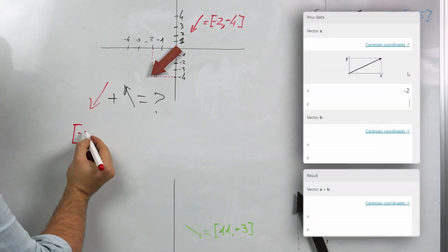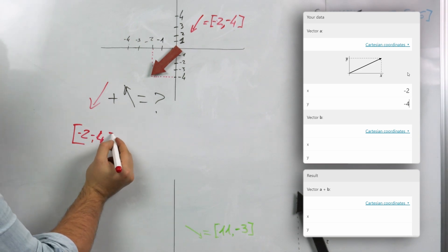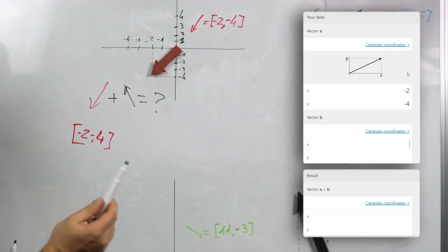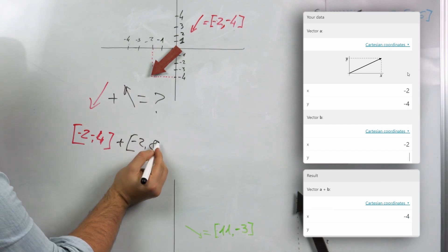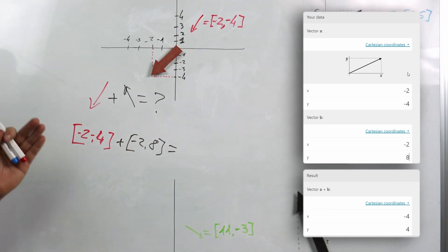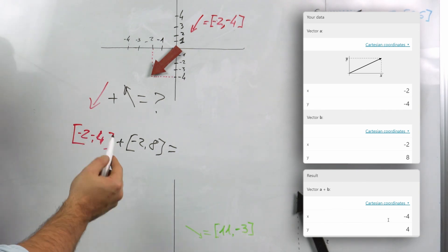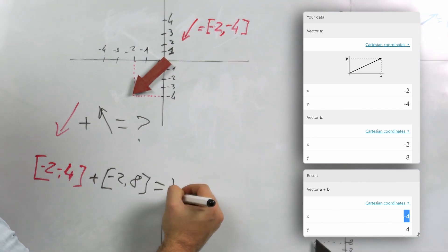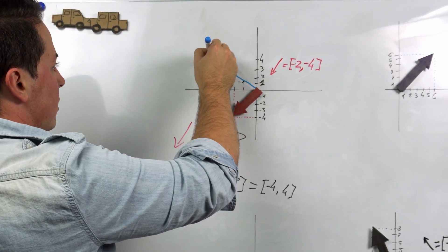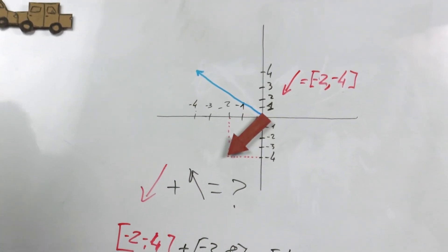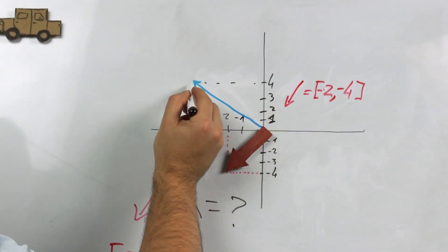So we take the red vector, which is (-2, -4), and we add it to the black vector, which is (-2, 8). All we need to do is sum the x components together and the y components together. In this case, the result would be (-4, 4). That means our new vector should be something like this, being -4 and 4.